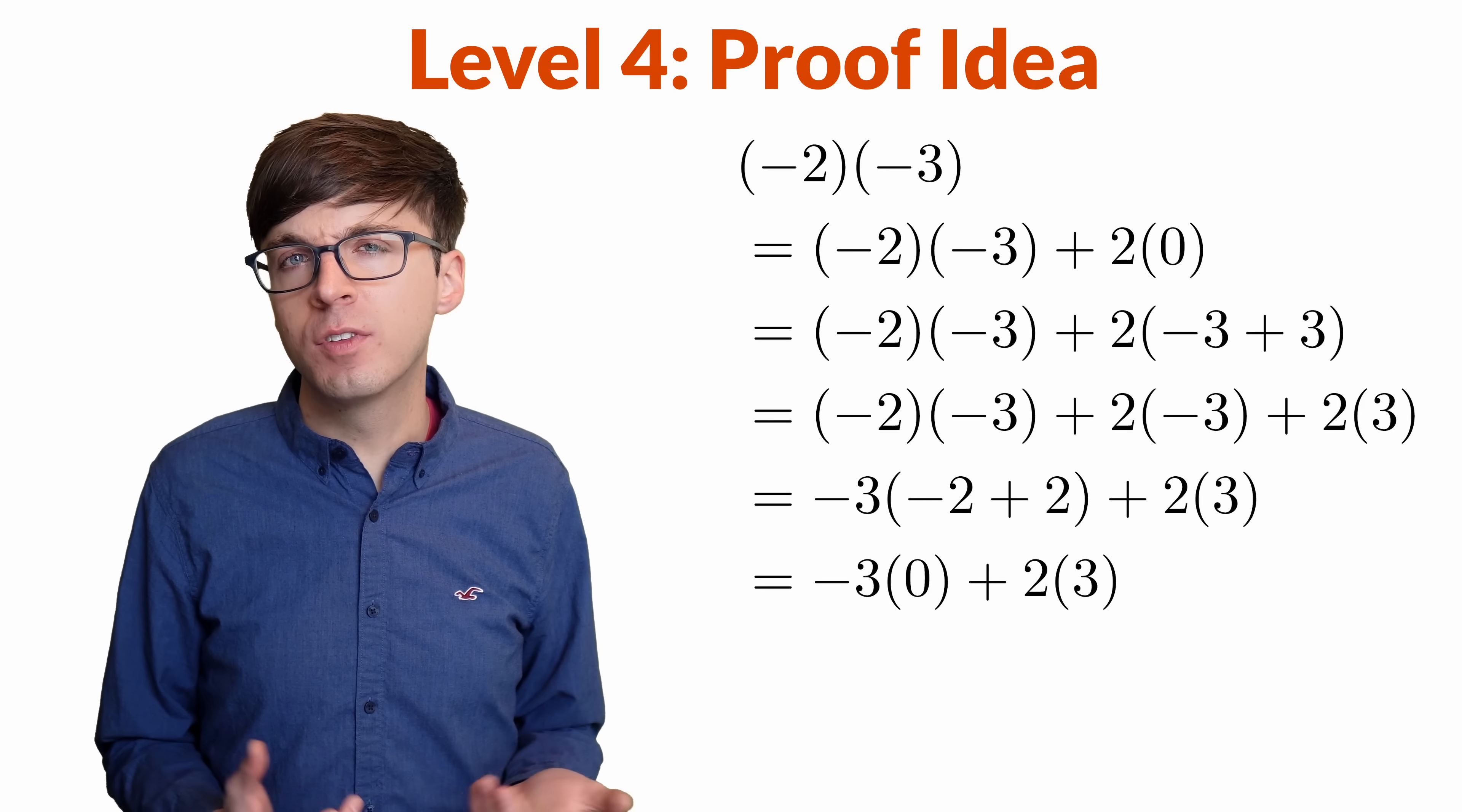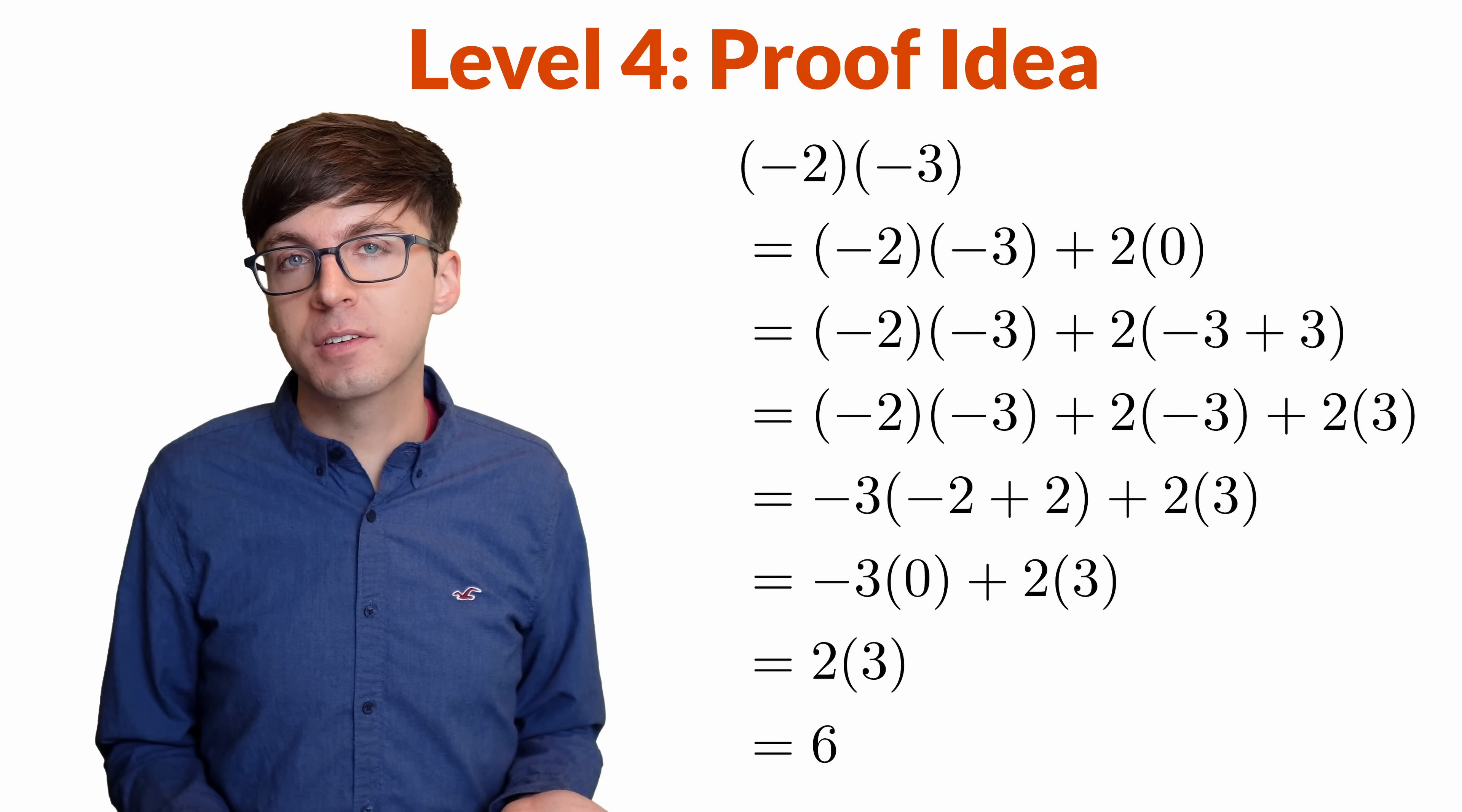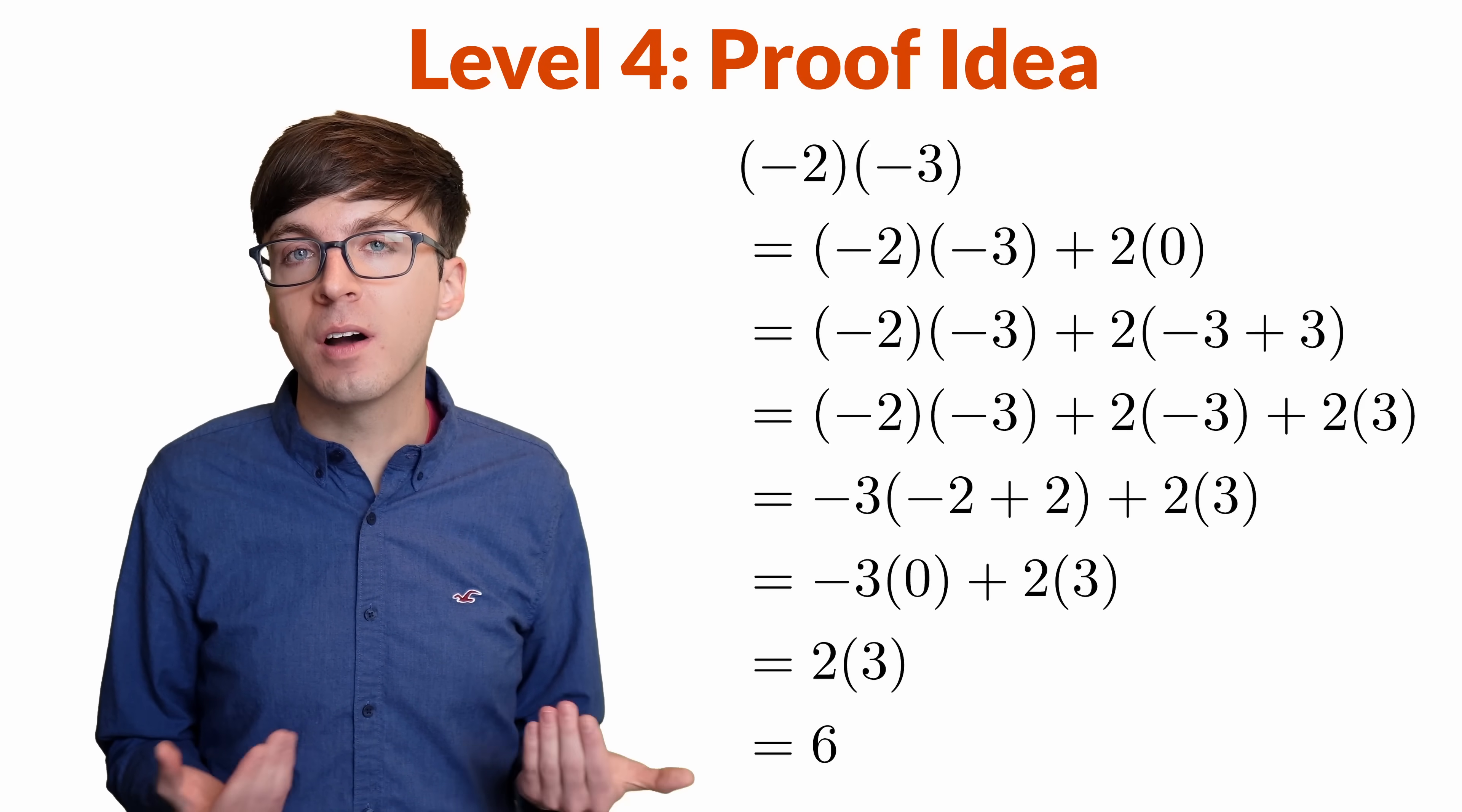We're pretty close now because negative 2 plus positive 2 is 0, so that first term is negative 3 times 0, which is just 0. So all we really have left is 2 times 3, which we know is 6. So we've shown that negative 2 times negative 3 equals positive 6.